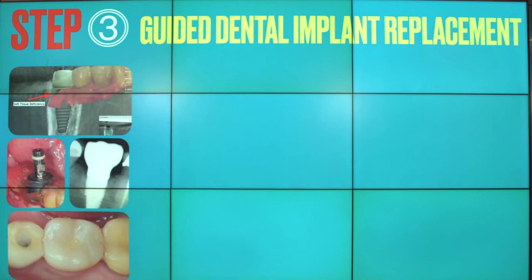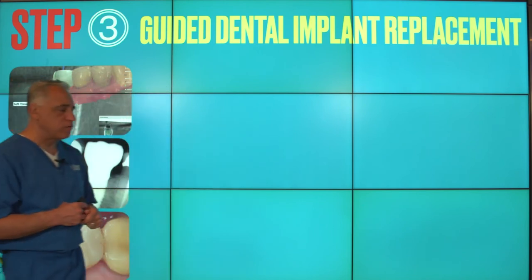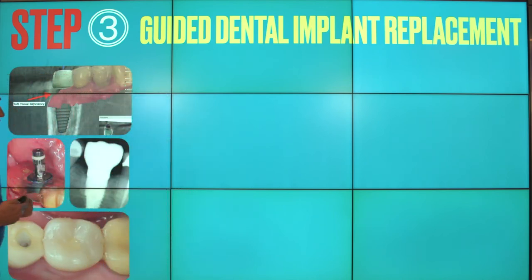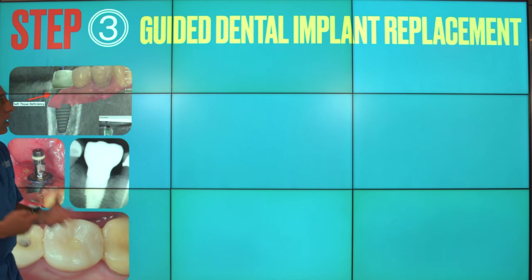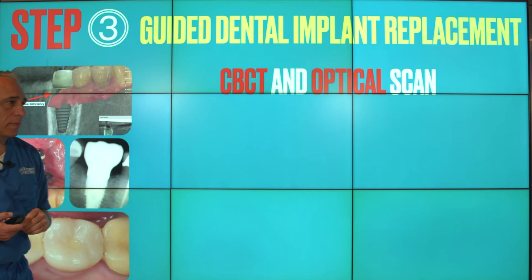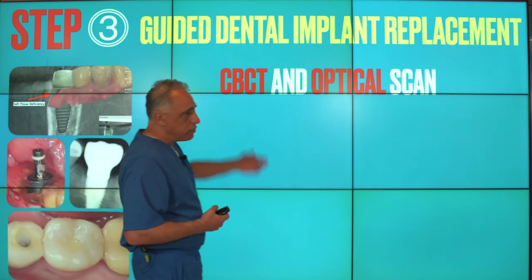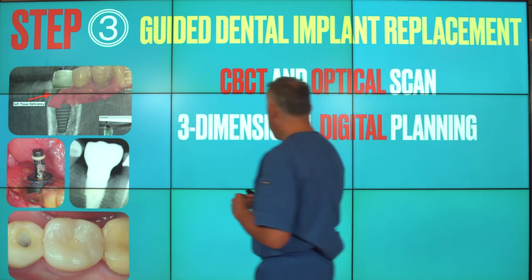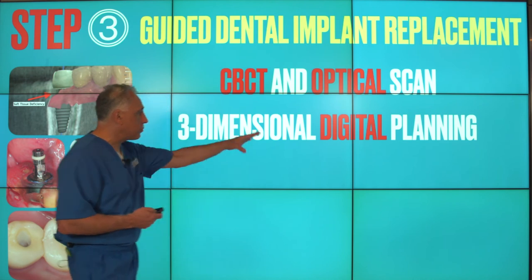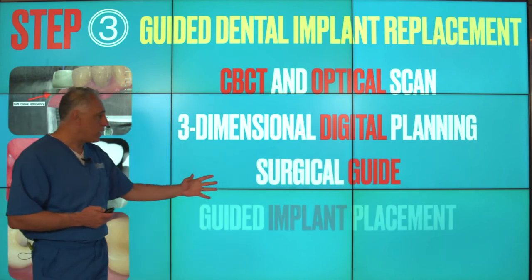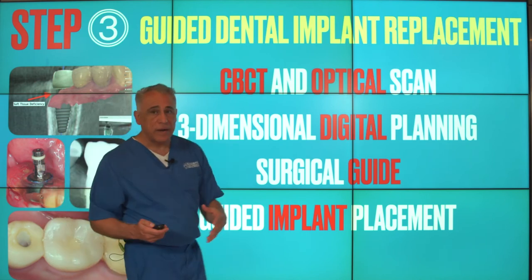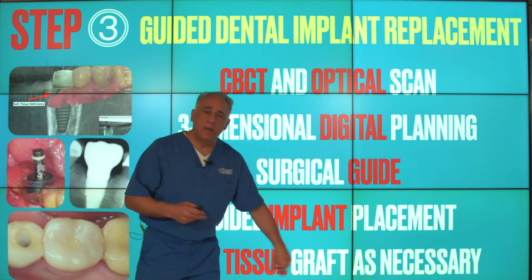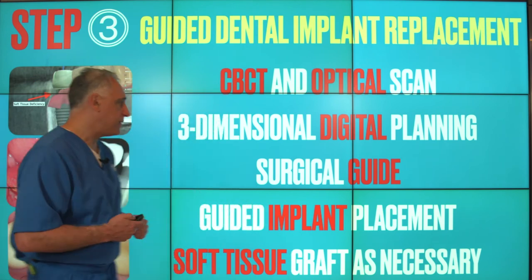Step three: once the area has healed — typically about four to six months after bone grafting — we replace the tooth following a guided implant placement approach. This means we take a new cone beam CT scan, an optical impression or scan of the patient's teeth, perform three-dimensional planning for our implant placement, and fabricate a surgical guide to help us place the implant in a guided fashion. We also address any soft tissue deficiency using a gum tissue graft if necessary.